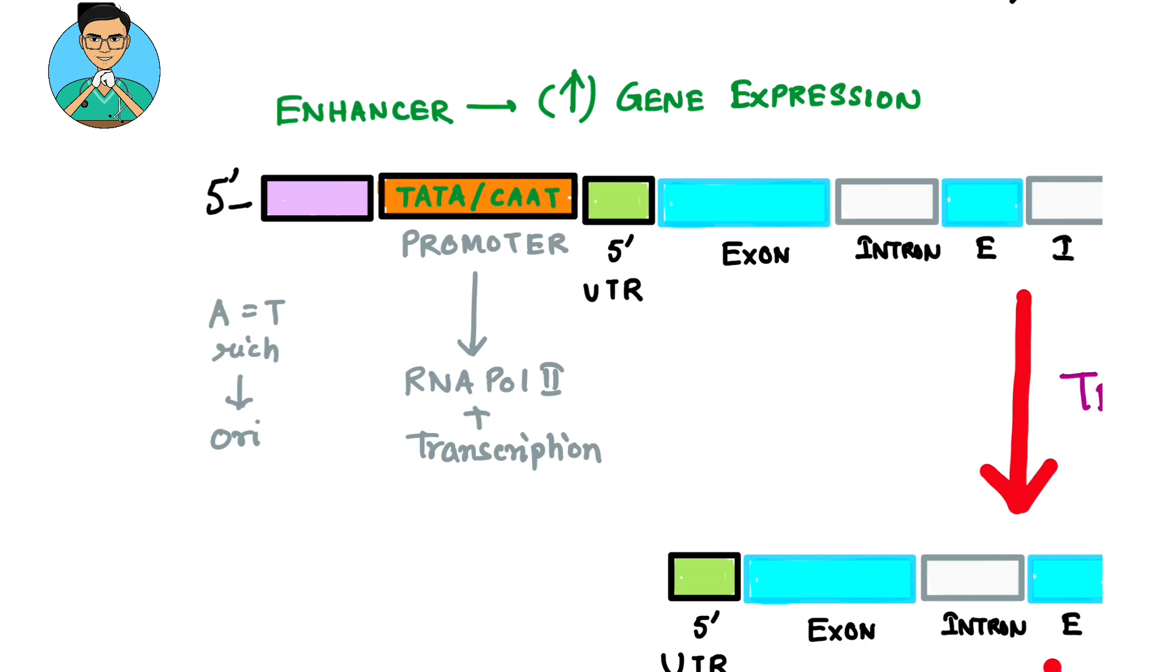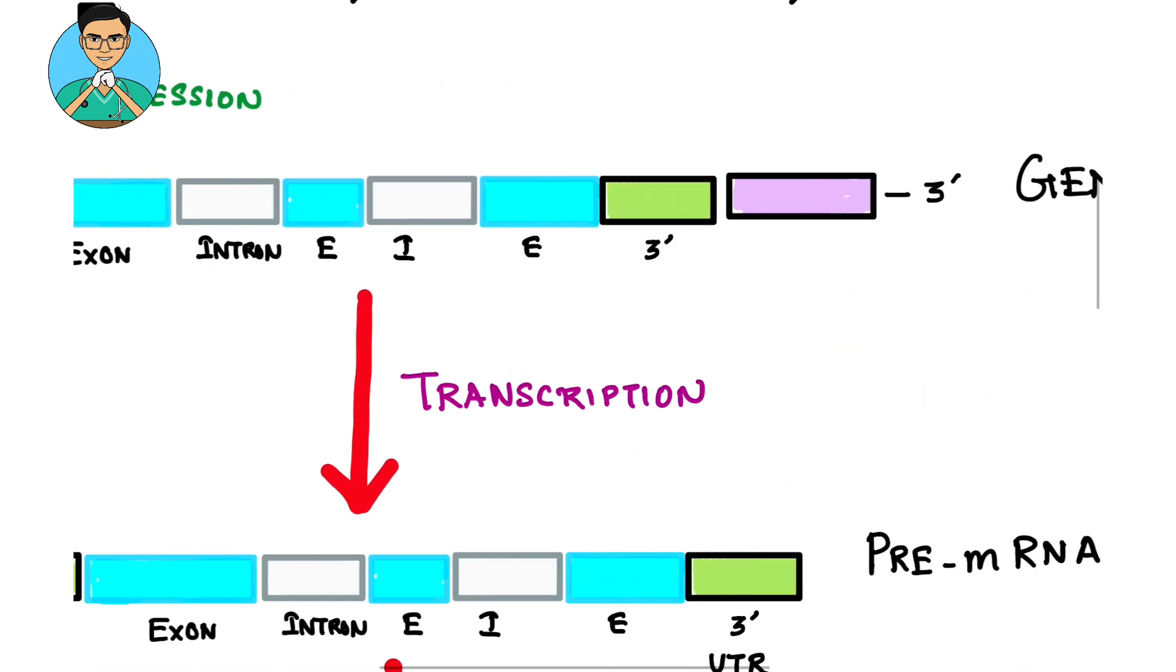Whereas if you have a silencer—suppose this purple segment over here is our silencer—then silencers are associated with decreased gene expression.